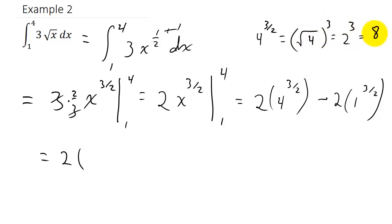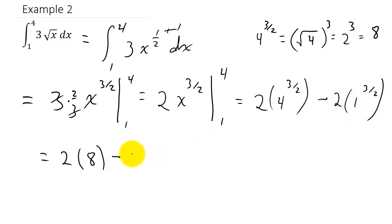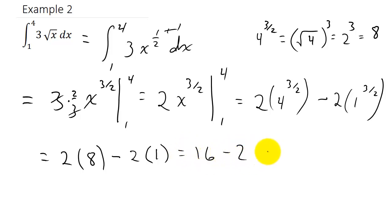So we have 2 times 8, and since 1 raised to any power is just 1, we subtract 2 times 1. That gives us 16 minus 2, which equals 14.